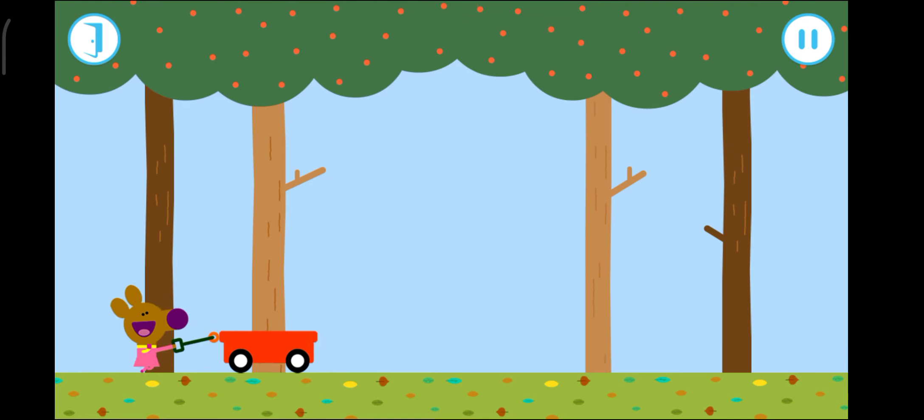Drag the cart from side to side to collect the falling acorns. Can you fill the cart all the way to the top? Keep going. Plenty more acorns to catch. Look out for those extra special acorns. Watch out for the banana skins.